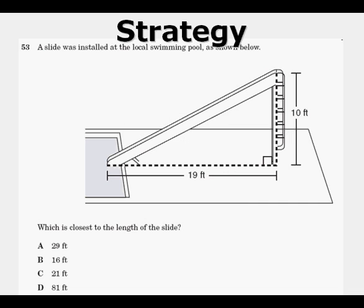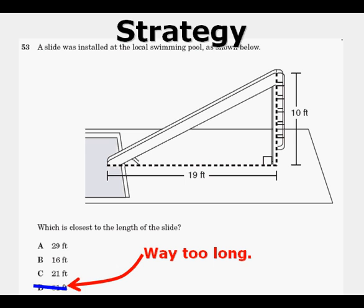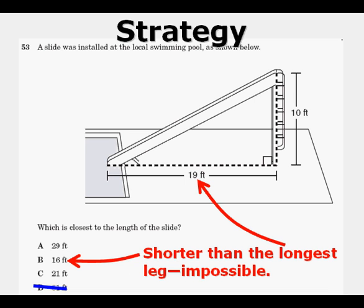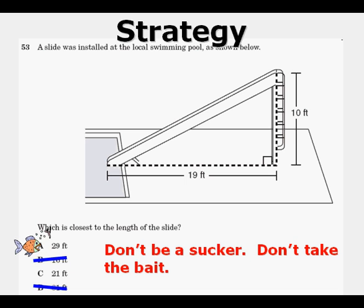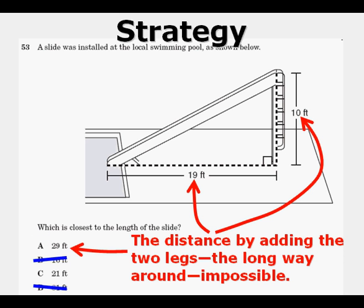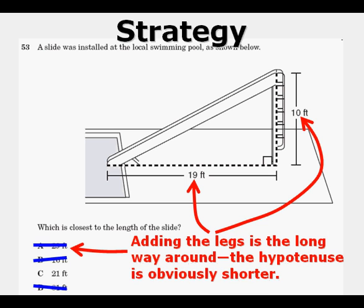Let's look at another problem: a slide was installed at the local swimming pool — which is closest to the length of the slide? Look at answer D: 81 feet — way too long, cross it out. Answer B is shorter than the longest leg, so that's impossible. And 19 plus 10 equals 29 — don't take the bait. That's the long way around. We're cutting the corner, so the hypotenuse is shorter. There can only be one possible right answer.